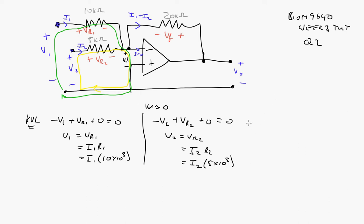All right, that's the input side. Then we can do the output. We're going to start down at ground and we'll go minus Vout plus Vf plus Vd equals zero.